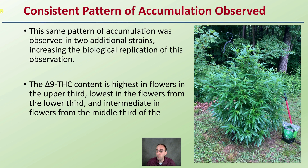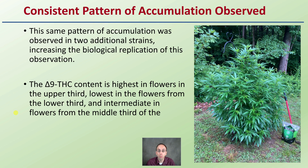A consistent pattern of accumulation was observed — the same pattern was seen in two additional strains as presented in the research, increasing the biological replication of this observation. The Delta-9 THC content was highest in flowers in the upper third, lowest in flowers from the lower third, and intermediate in flowers in the middle third. This gives you the greatest, middle, and lowest amounts when trying to pick that prime flower for the highest levels of cannabinoid accumulation. This data provides extra incentive to keep those buds pointed towards the light to maximize cannabinoid production.